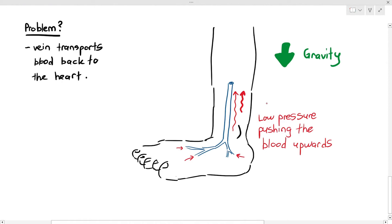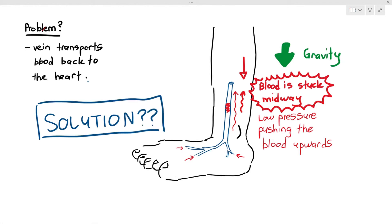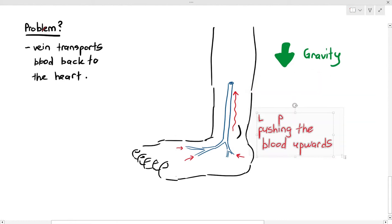So, why is this a problem? Well, because as the blood is slowly trying to go upwards with its low pressure, gravity pushes it the opposite way, and this causes the blood to be stuck midway. And this is not good, because it stops the blood flow in the vein. So, this is a huge problem. So, what is the solution? How did we evolve to solve this problem?